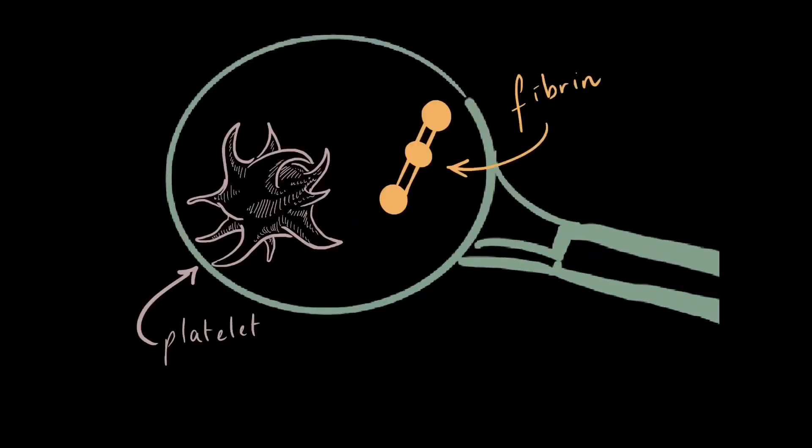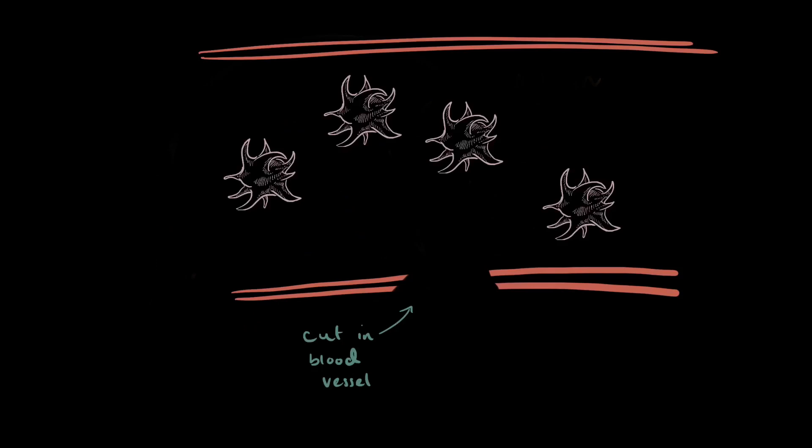Our blood is packed with tiny cell fragments called platelets and a very important protein known as fibrin. The very instant a blood vessel is cut, platelets act like little first responders and bind together to form a basic clot.